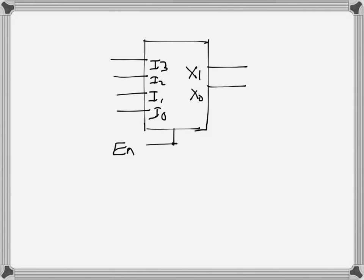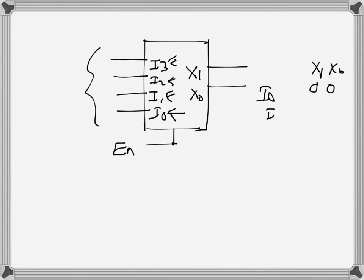In an ordinary encoder, only one of the input lines can be active at a time. Since active means high (logic 1), only one input can be 1 at a time, and the output corresponds to that line's binary number. Line 0 is i0, line 1 is i1, line 2 is i2, and line 3 is i3 — so whichever line is high, the output encodes its corresponding binary number.